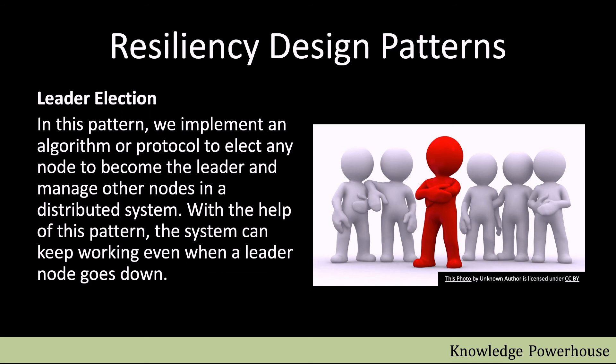Leader election is another design pattern where we implement an algorithm or protocol to elect a node to become the leader and manage other nodes in a distributed system. In systems like Cassandra, any node can become a leader, so we need a protocol defining how the remaining nodes elect a new leader in case of failure. With this pattern, if the leader node goes down, the system can continue because other nodes know how to elect a new leader.